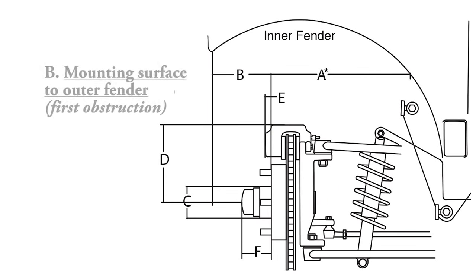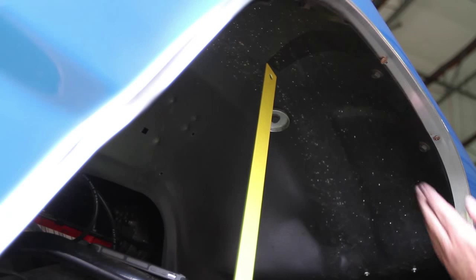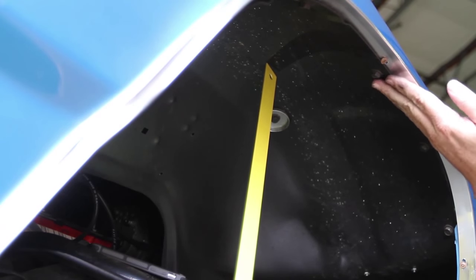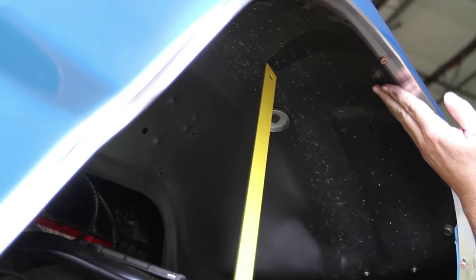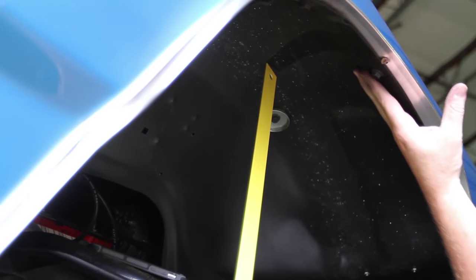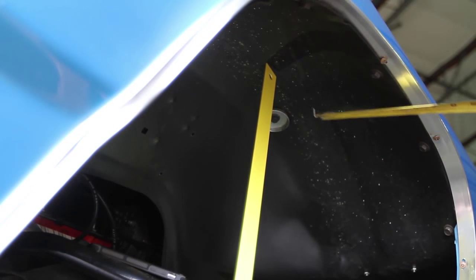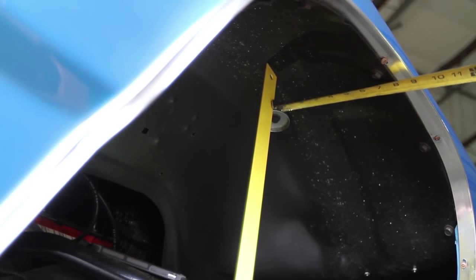Now you will need to measure the distance from the wheel mounting surface out to the first obstruction. This will be B on the worksheet. This obstruction could be the wheel well opening, the fender lip, an inner fender bolt, etc. In this case, the inner fender bolt would be the first contact point for the tire. Write down that distance for section B.